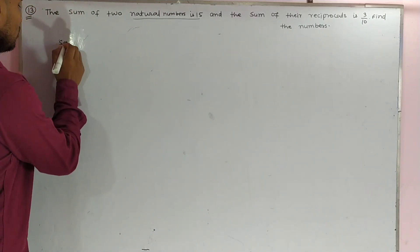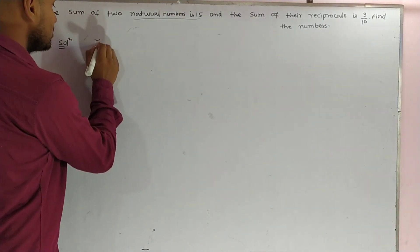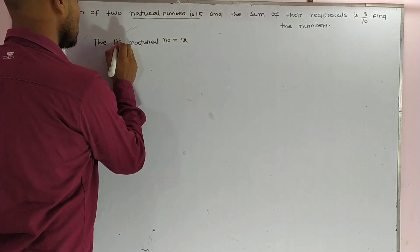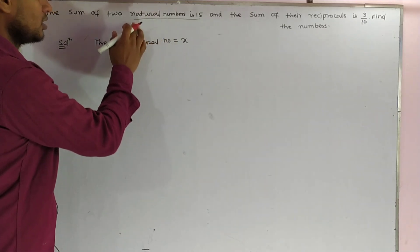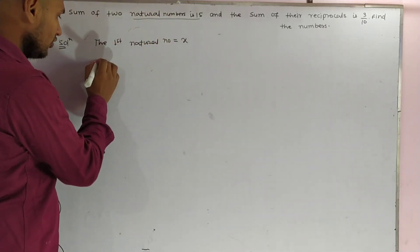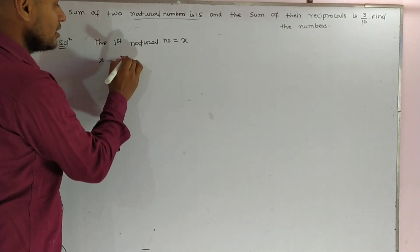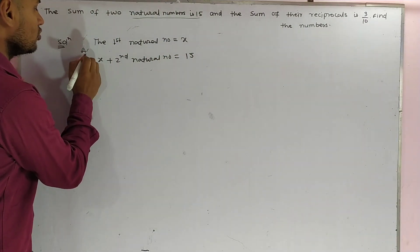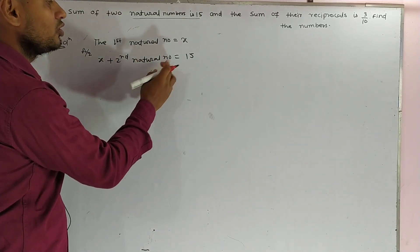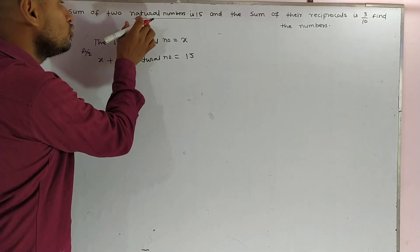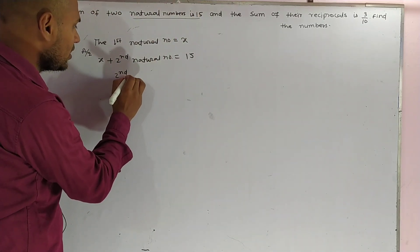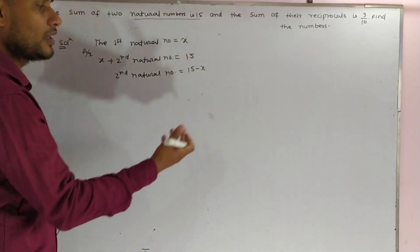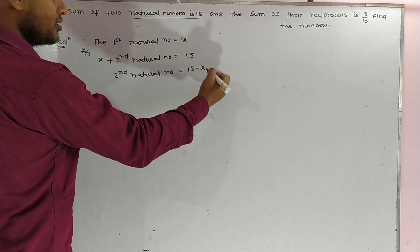In the solution, let us assume the first natural number is equal to x. According to the question, the sum of the two natural numbers is x plus the second natural number equals 15. From here, the second natural number becomes 15 minus x. So the first natural number is x and the second is 15 minus x.